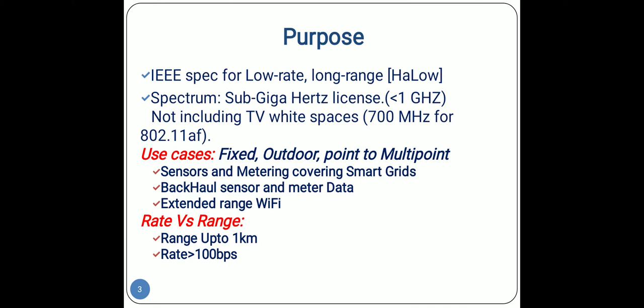The third use case is extended range Wi-Fi for outdoor extended range hotspots or cellular traffic offloading when distances already covered by IEEE 802.11a/b/g/n/ac are not sufficient for industrial Wi-Fi. This standard does not include white spaces, that is 700 MHz, for 802.11af.